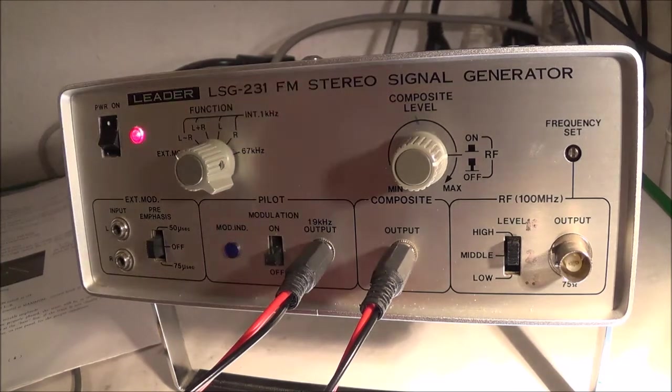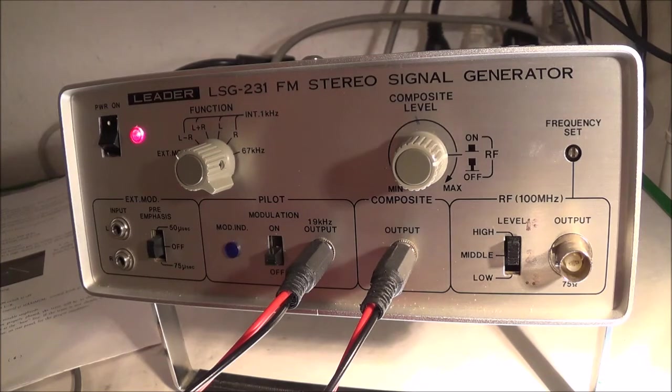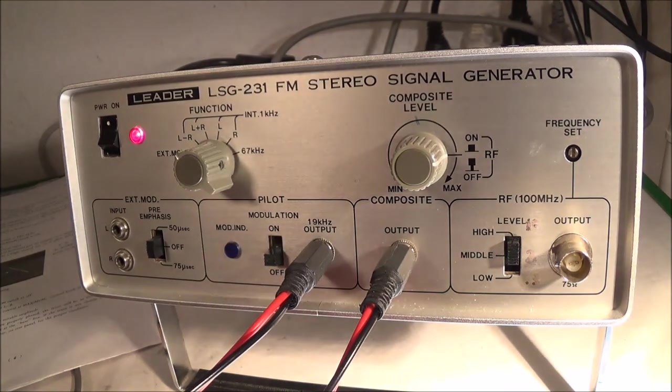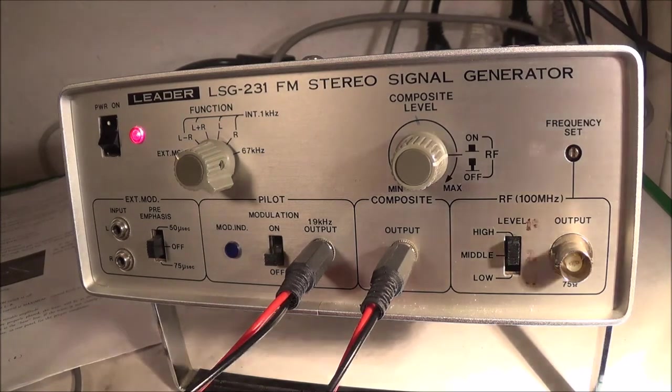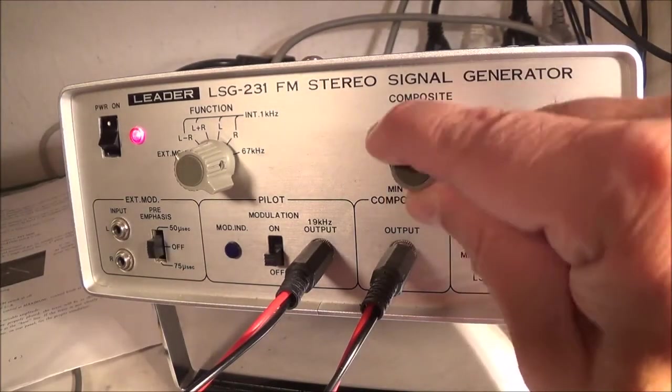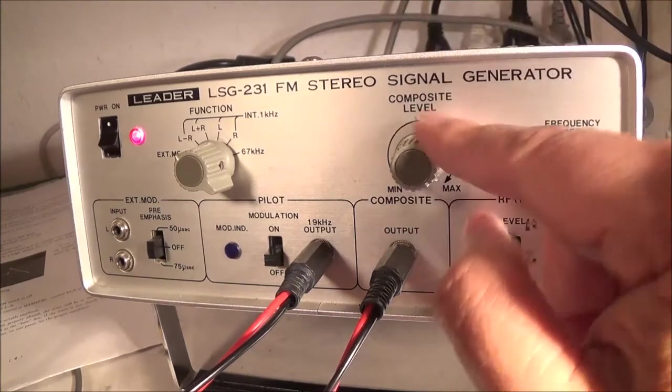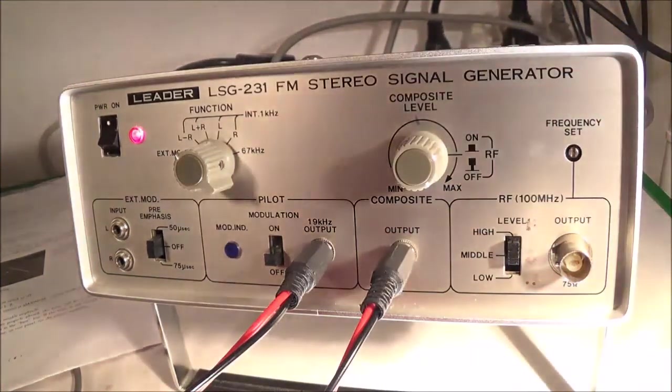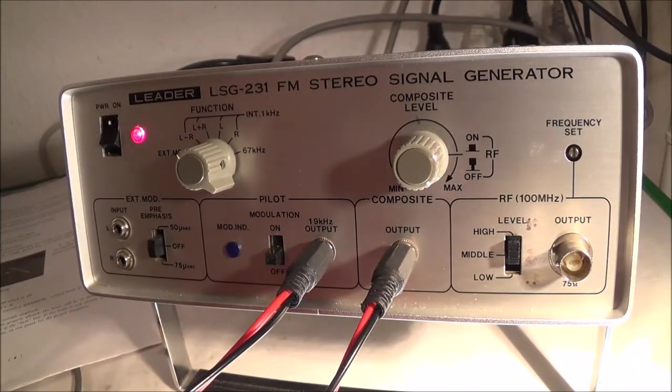Oh one more thing, it says push the composite amplitude to maximum. And when the two signals are properly phased, I am reading from the manual now, the trace will be shown in figure 2.2 where two loops meet at the baseline. And if the trace is not clearly defined, set the mod phase adjuster on the rear panel.